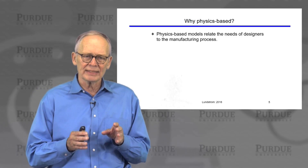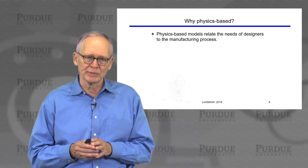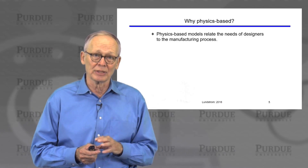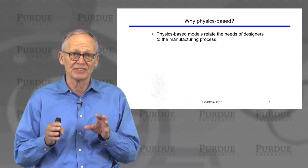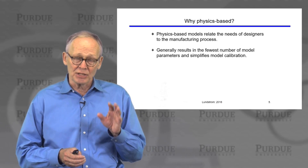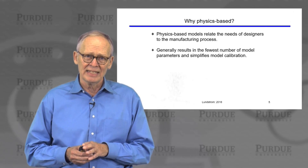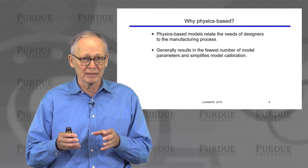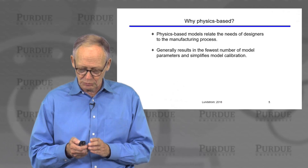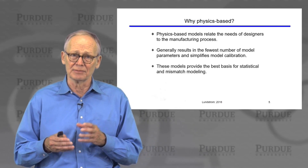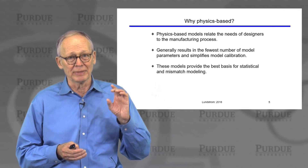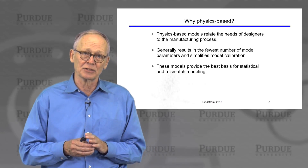Why prefer physics-based models? One reason is that they relate the needs of designers in terms of circuit performance to the manufacturing process. The parameters are not just curve fitting parameters — they have physical significance. You can talk to a semiconductor technologist and work on those parameters to improve circuit performance. Generally these models result in the fewest number of parameters, simplifying calibration. They also provide the best basis for statistical and mismatch modeling; for example, if gate oxide thickness is controlled to plus or minus x percent, you can directly relate those numbers to circuit performance.